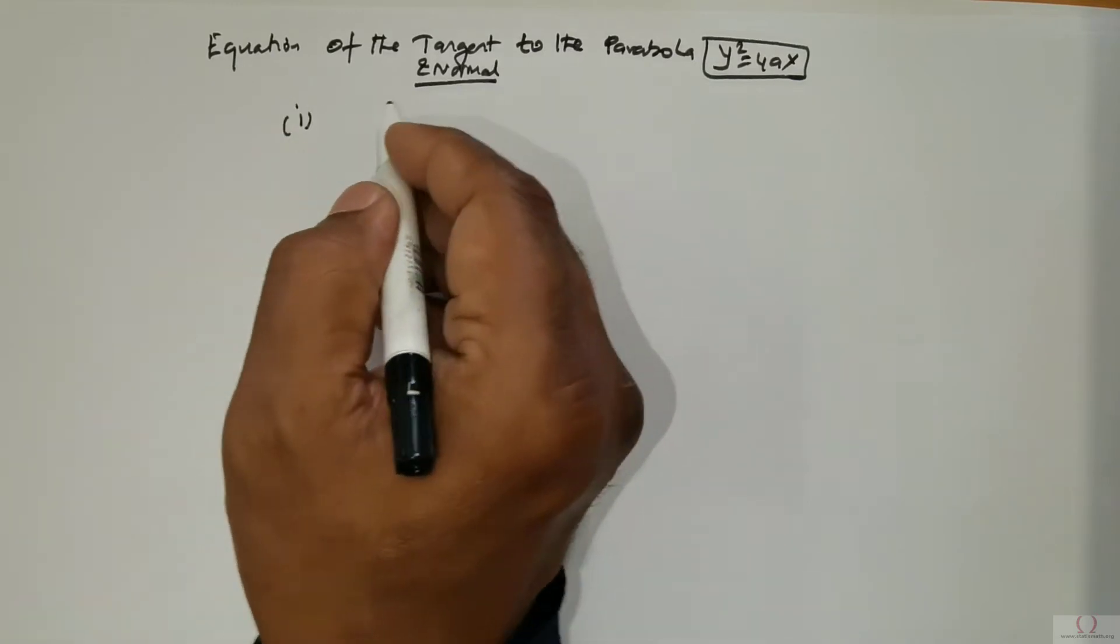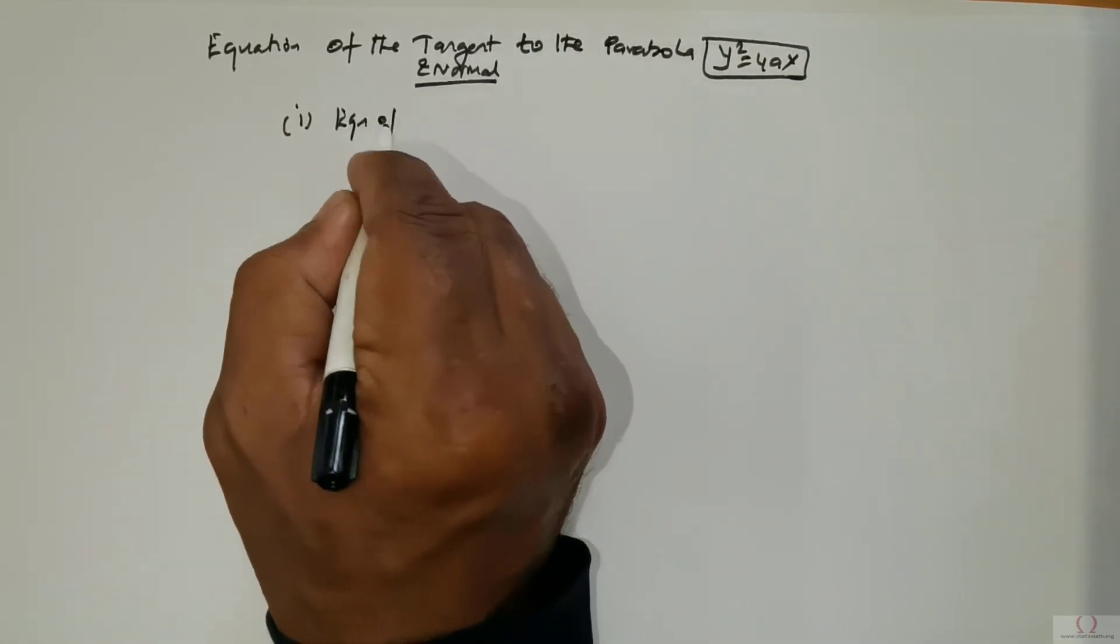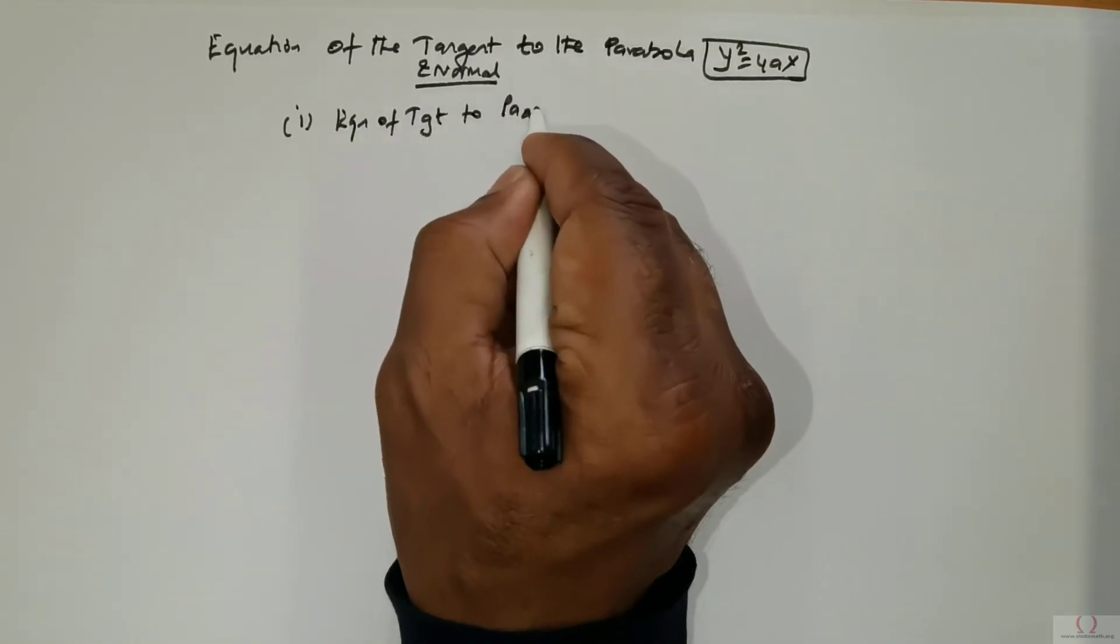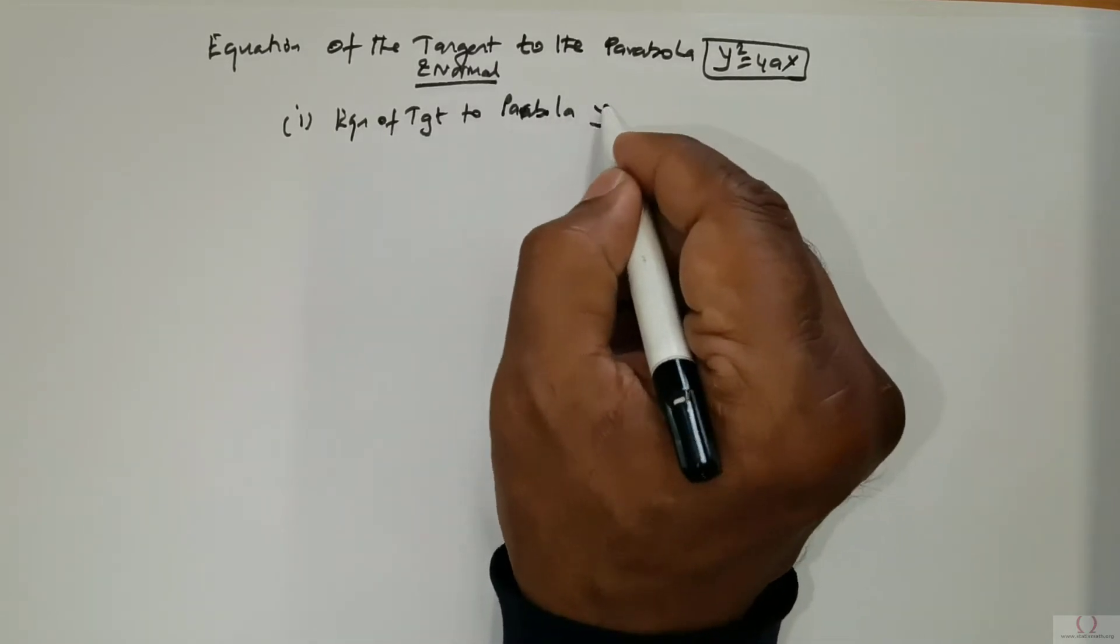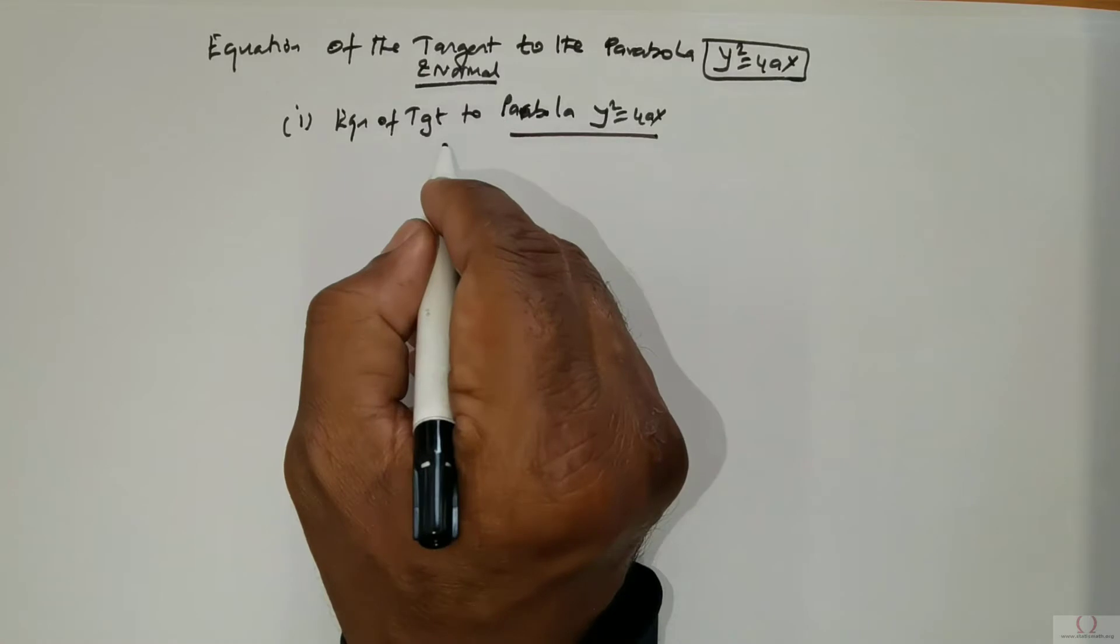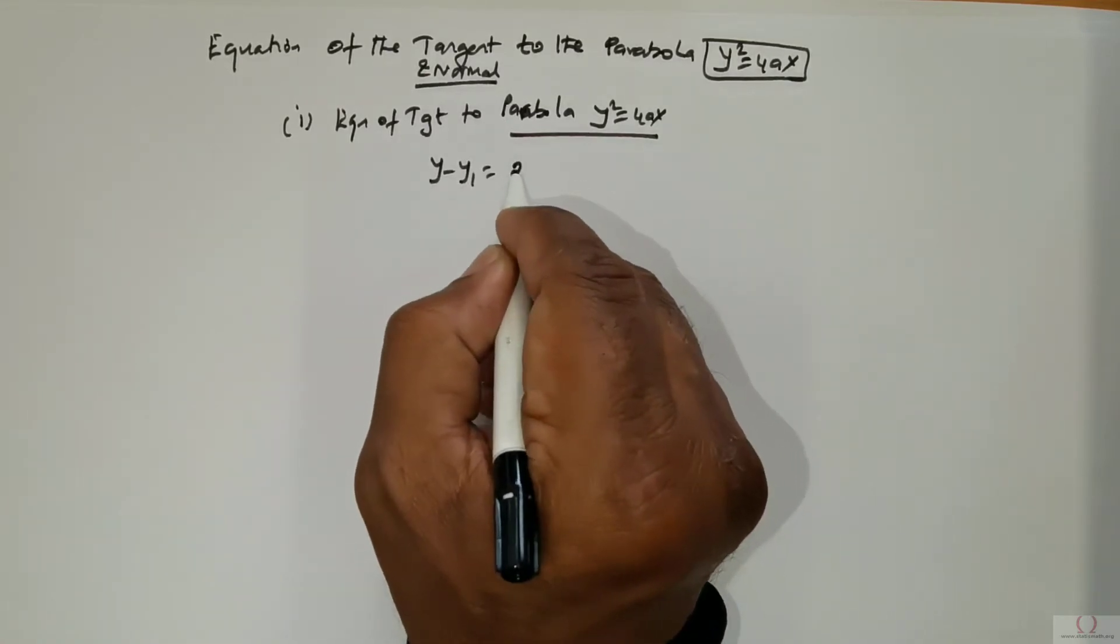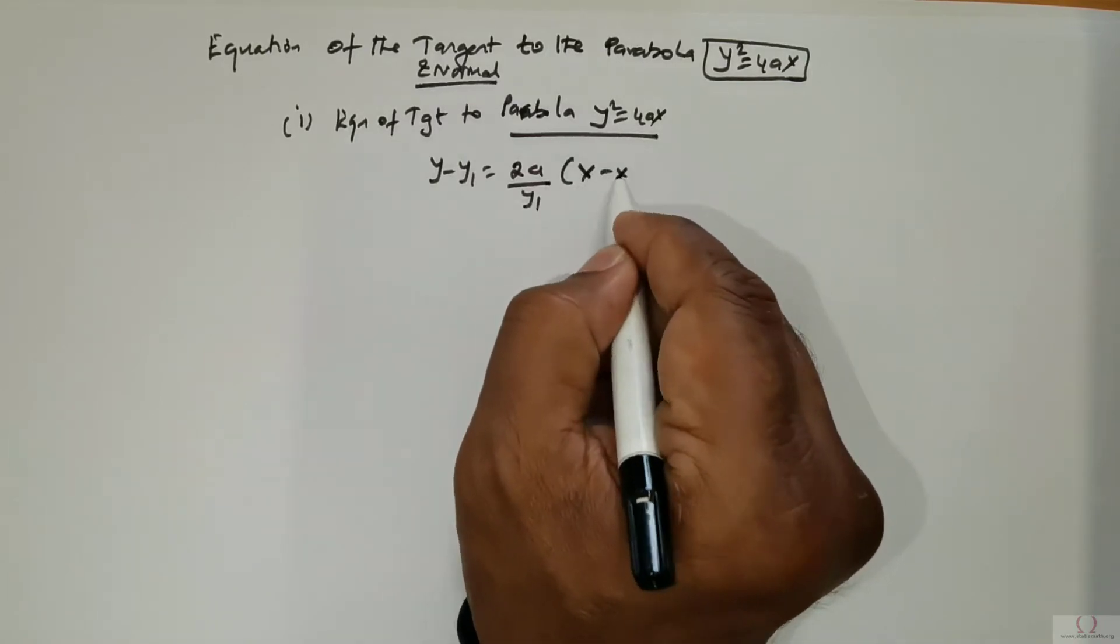It is sufficient that you know the equation. So the equation of the tangent to parabola y² = 4ax is given to be of the form y - y₁ = (2a/y₁)(x - x₁).